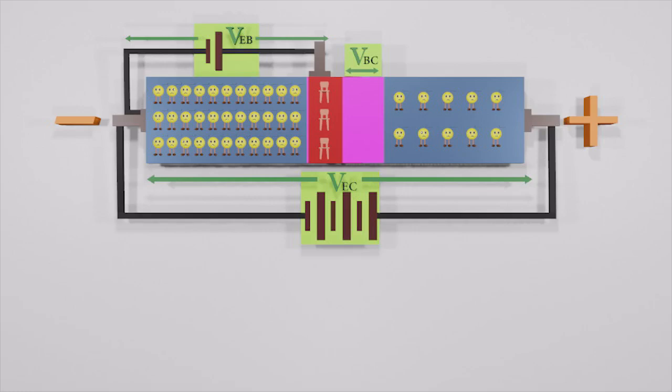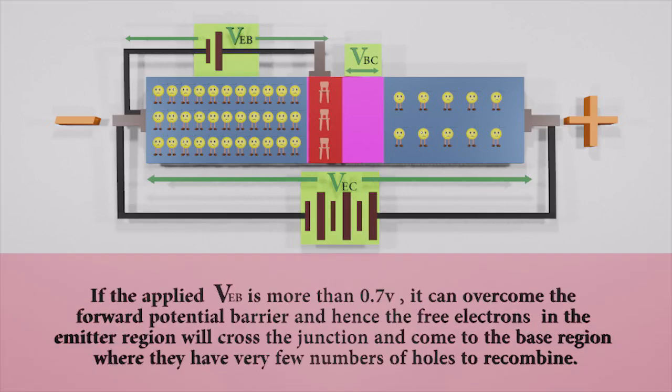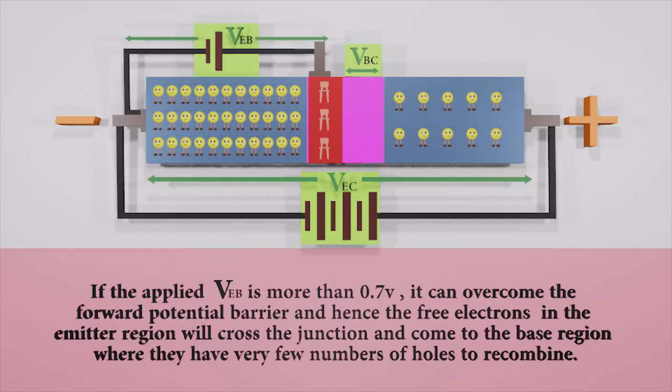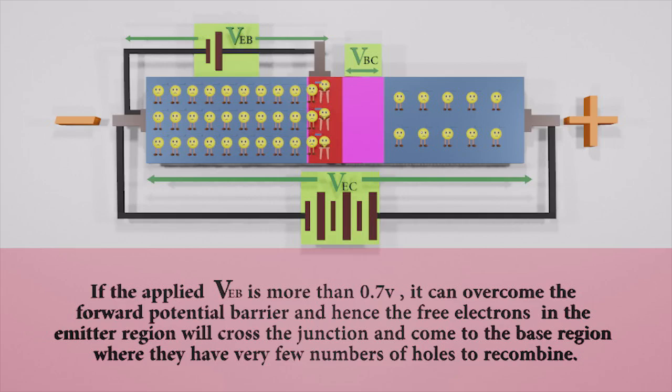If we apply a separate power source to the BE junction, the base-emitter junction gets forward voltage individually and certainly. If the voltage of BE is more than 0.7 volt, it can overcome the forward potential barrier and hence, the free electrons in the emitter region will cross the junction and come into the base region, where they get very few holes to recombine.